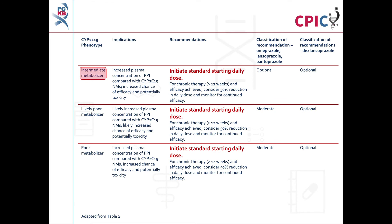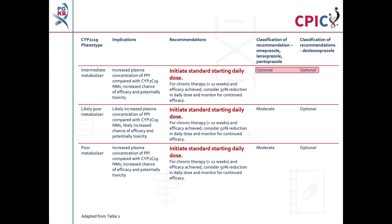Patients with a CYP2C19 intermediate metabolizer phenotype will have increased PPI concentrations. This increases PPI efficacy and potentially increases the risk of toxicity. These patients can be given the standard starting dose. A dose reduction of 50% can be considered for patients on chronic therapy and where efficacy has been achieved. This is an optional recommendation for all four PPIs.